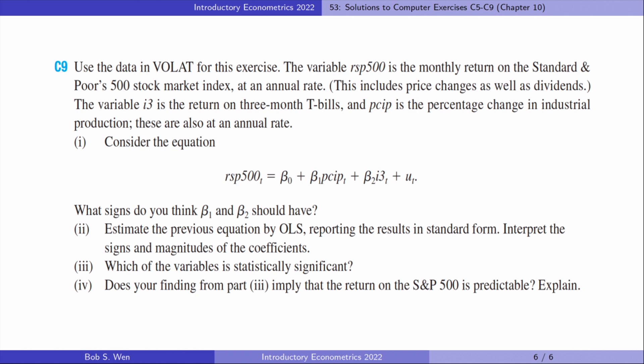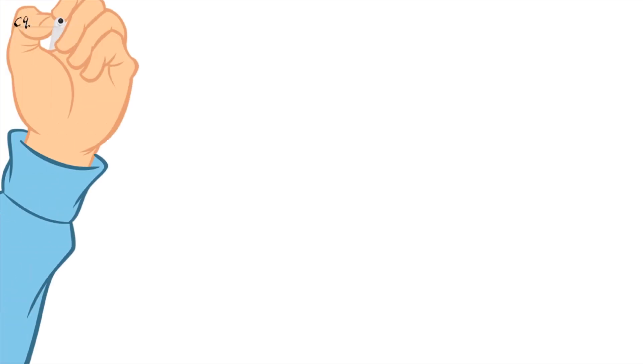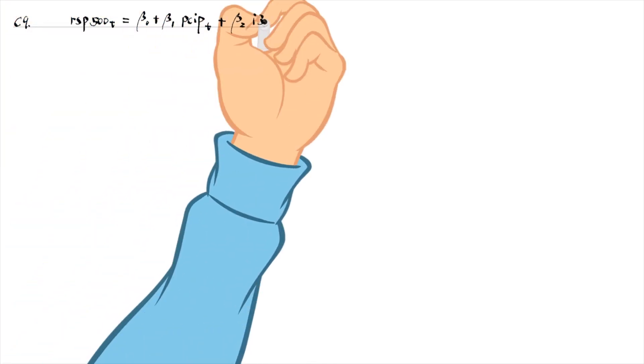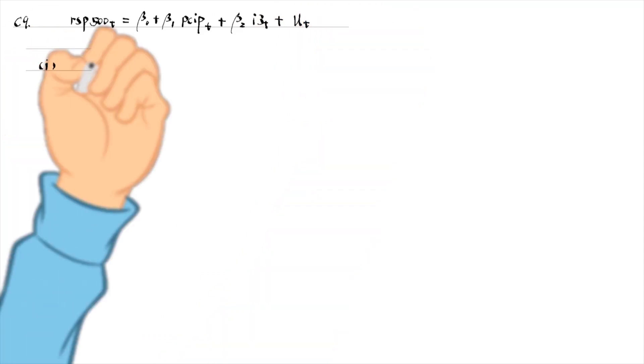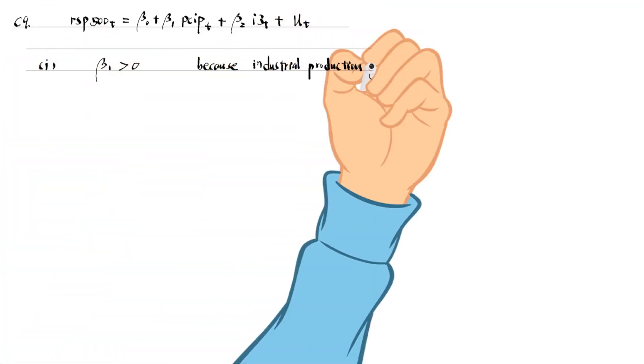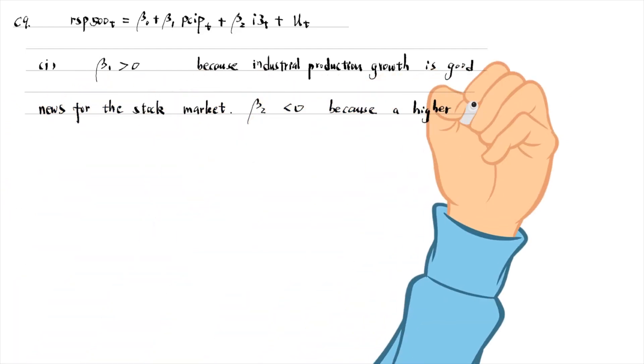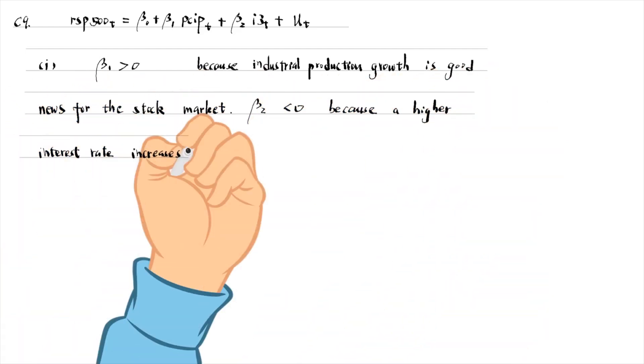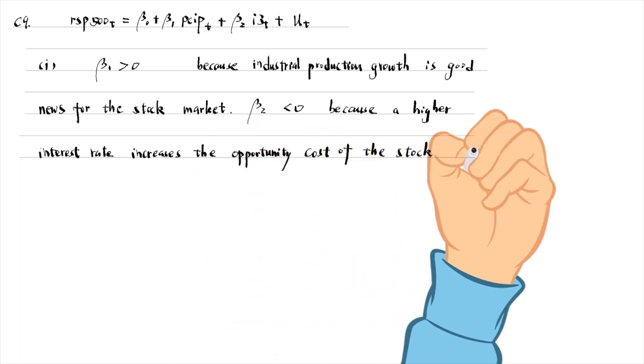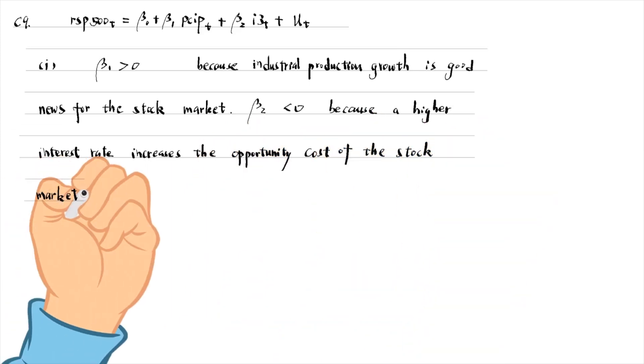Let's solve computer exercise 9. We regress the stock market index on the percentage change in industrial production and return on 3-month t-bills. Beta 1 should be positive because industrial production growth is good news for the stock market. Beta 2 should be negative because a higher interest rate increases the opportunity cost of the stock market investment.